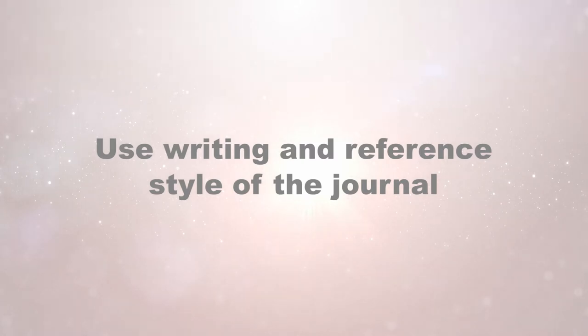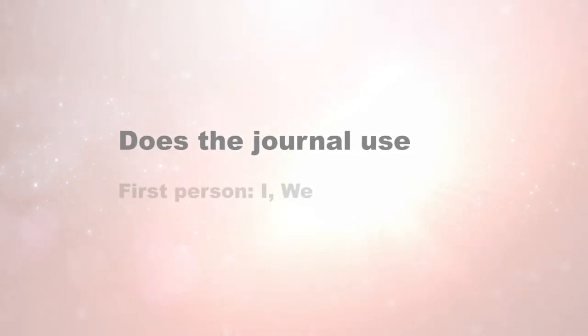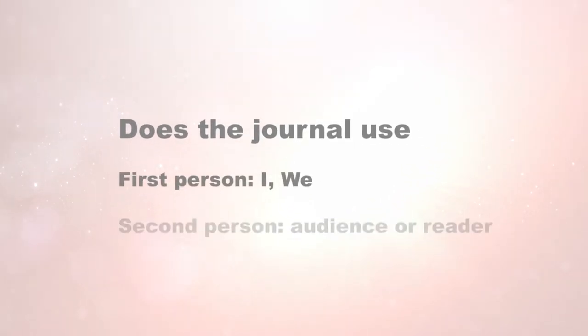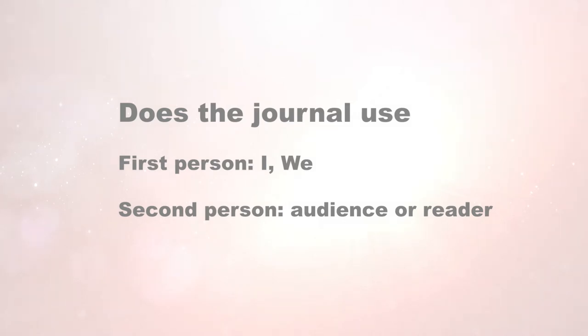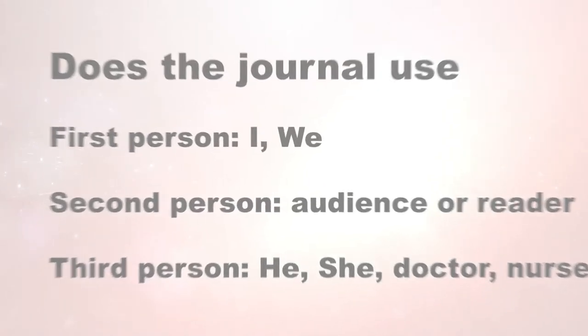When you're writing, look closely at the journal to see what writing style they use. Do they use first person, which would be 'I' and 'we'? Do they use second person, where they talk directly to the reader with phrases like 'assess the patient every four hours'? Or does the journal write in the third person — for example, 'the nurse monitors the patient every four hours'? Be sure you're writing in first, second, or third person consistent with that journal's style.